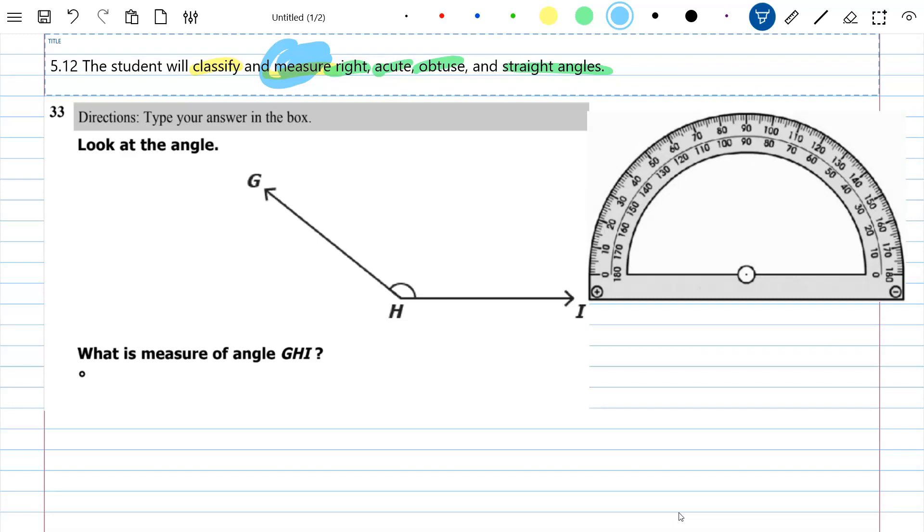You had to look at angle GHI and find its measure, and you had to be within five degrees of it. You could see they already had the degree symbol right there for you. I've got a protractor here, similar to the one you had on your benchmark.